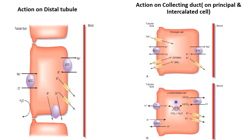In the intercalated cell, the non-genomic action of aldosterone increases the activity of the hydrogen-potassium ATPase pump. This pump helps potassium reabsorption while secreting hydrogen ions into the luminal surface at the collecting duct level. After potassium is reabsorbed, it is taken back into the blood.